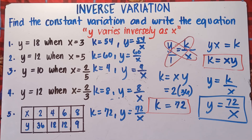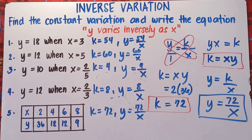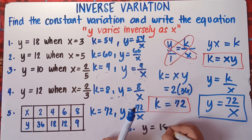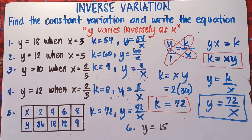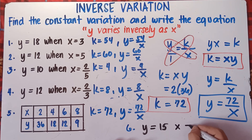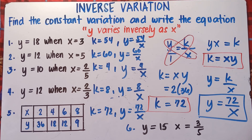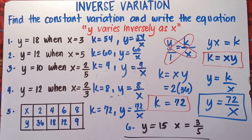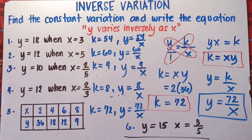Now you try this one, class — let me check if you understand our topic on inverse variation. For number 6: y equals 15 and x equals 3 over 5. Find k and write the equation. I hope you learned something new today. If you like this video, don't forget to like, share, and subscribe — share it with your friends and classmates so we can help more students. This is Teacher MJ. Have a great day, class. Goodbye for now!